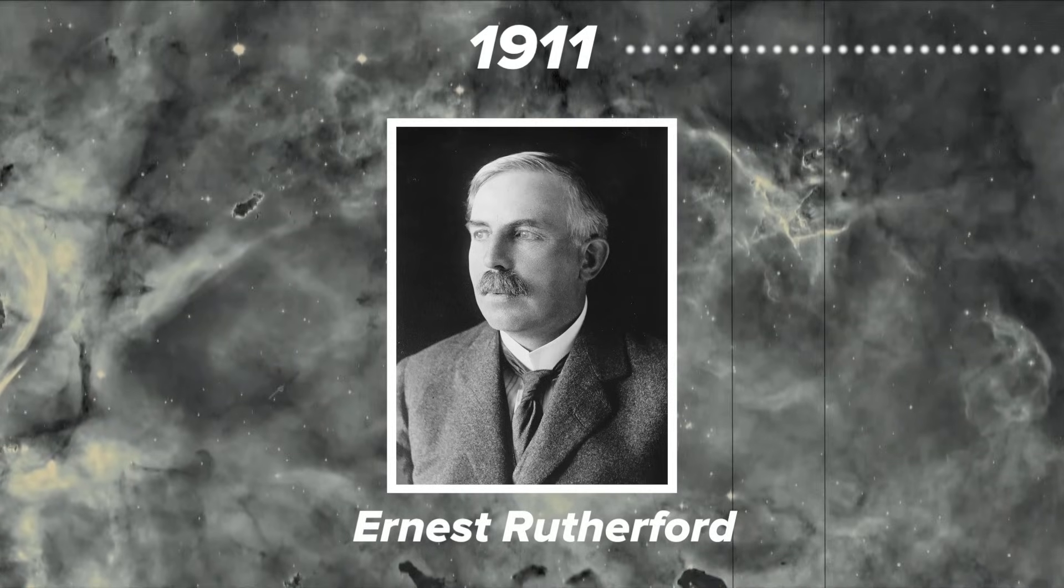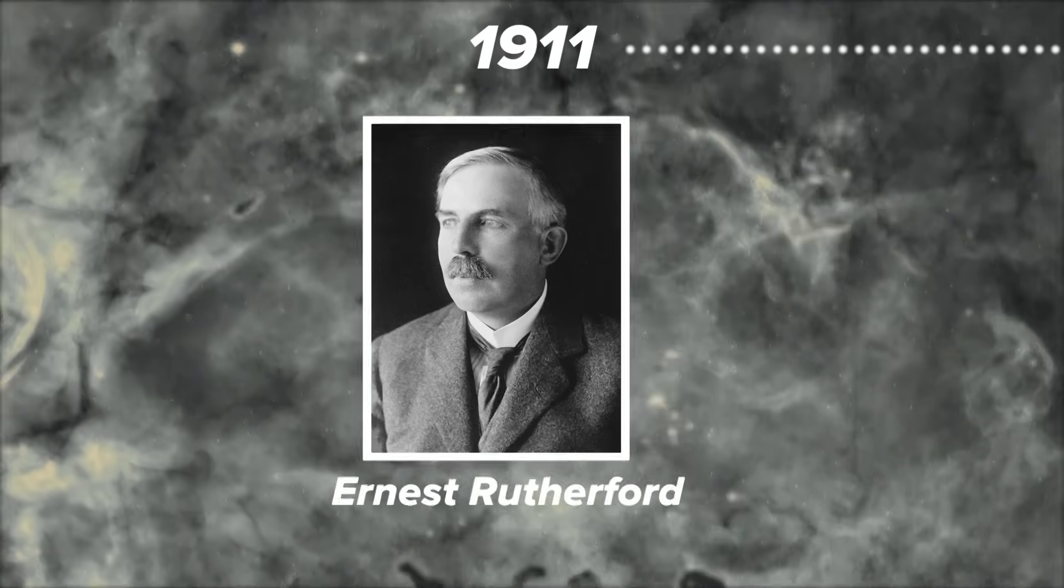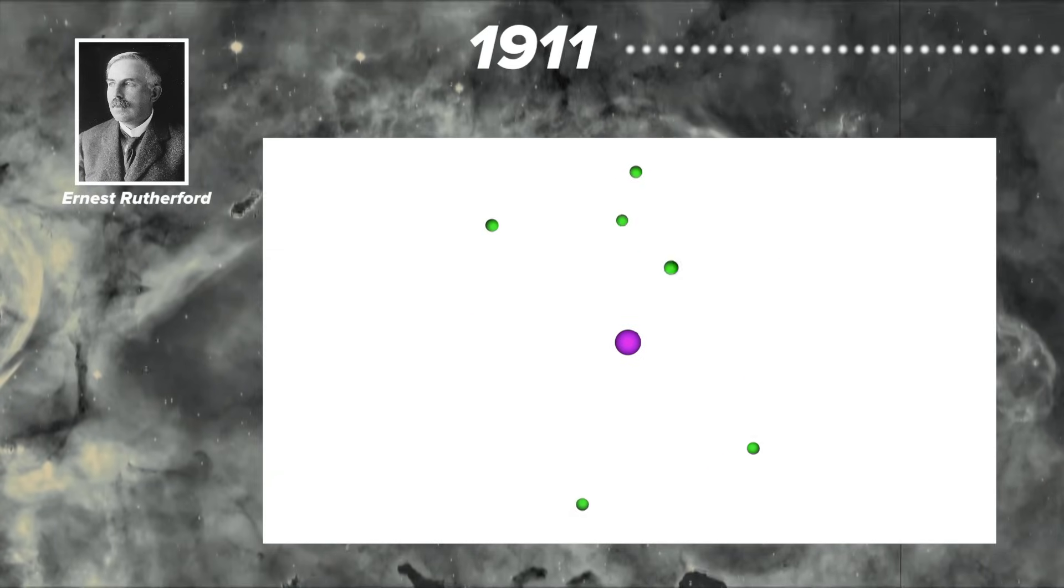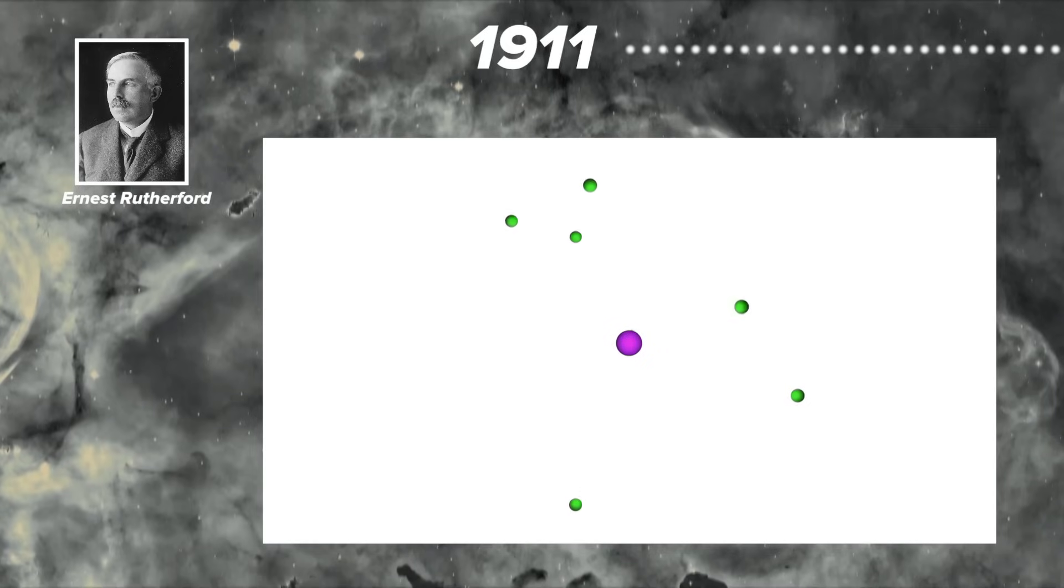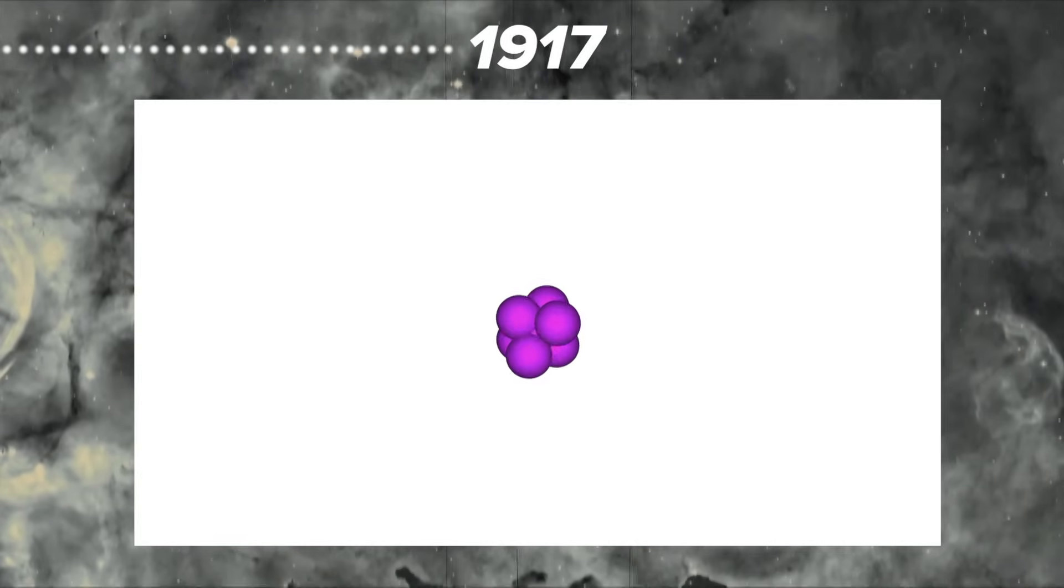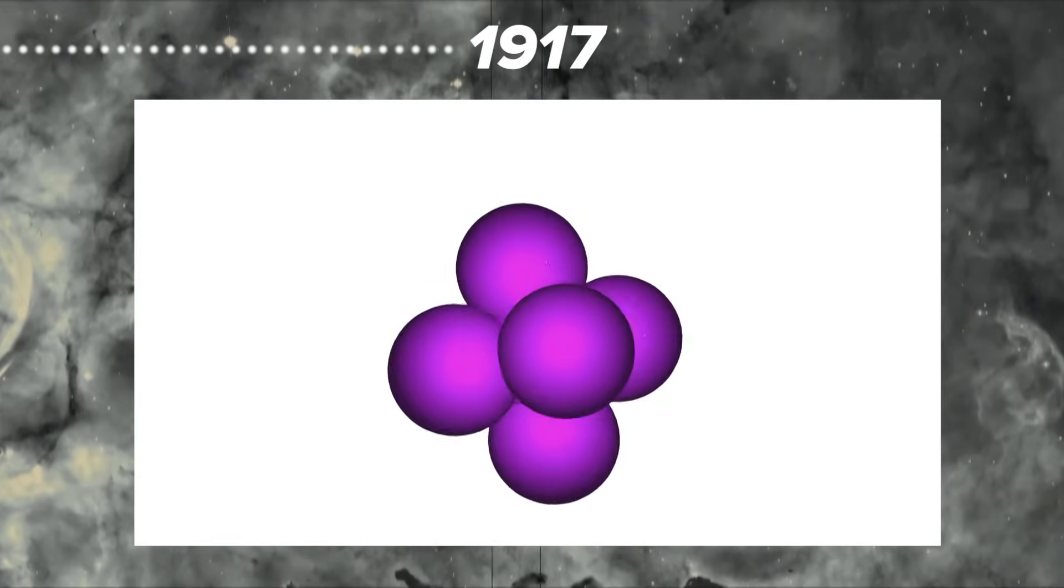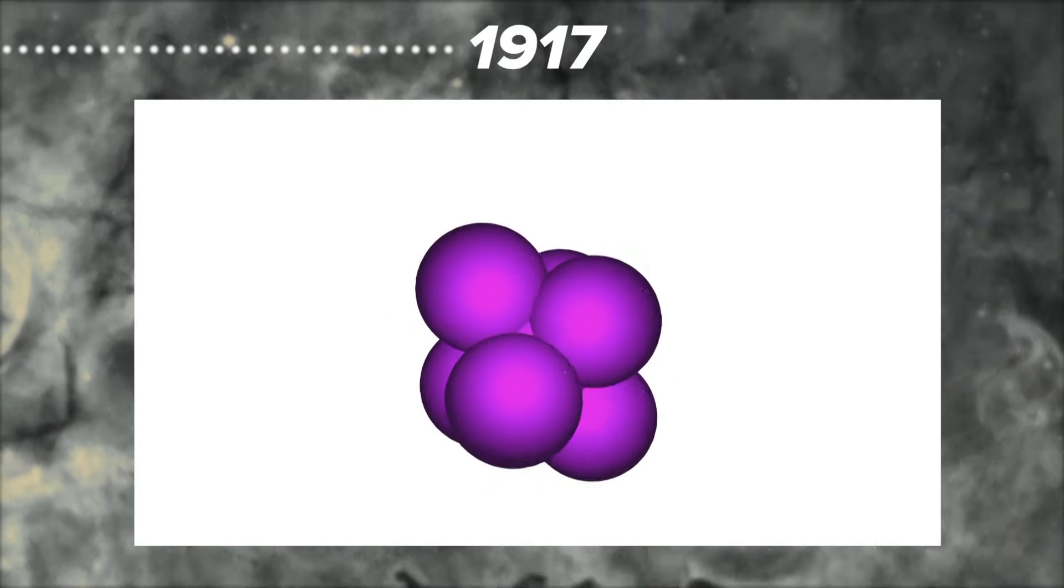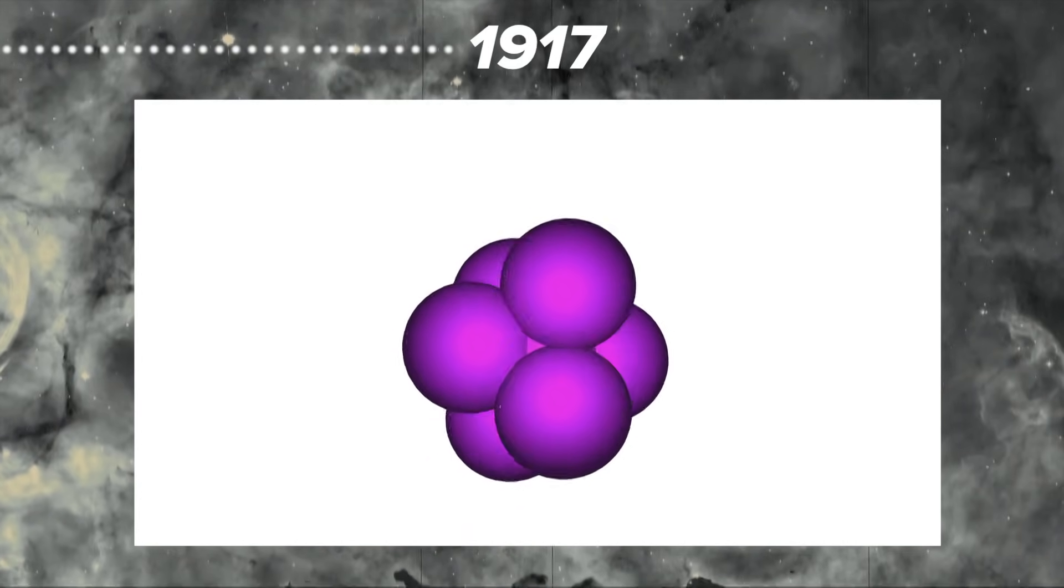In 1911, Ernest Rutherford discovered the basic structure of the atom, which is that it consists of a small and dense core of positive electric charge called the nucleus, surrounded by a cloud of negatively charged electrons. And in 1917, he discovered the proton, which meant that the nucleus consisted not of a big blob of electric charge, but of a whole bunch of smaller blobs held together.